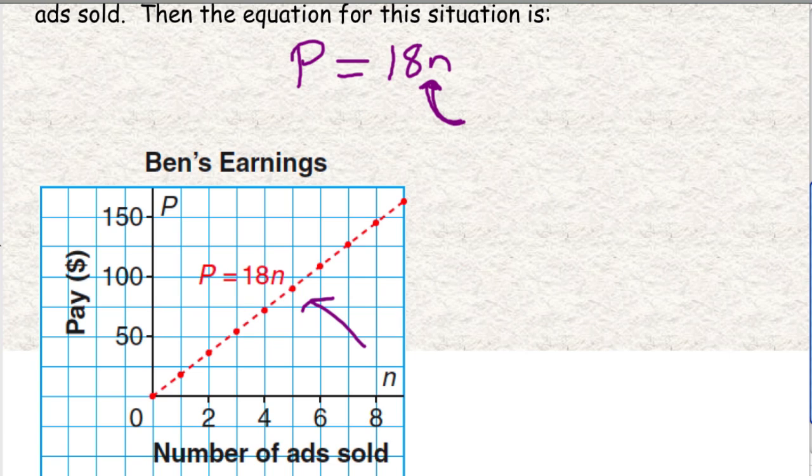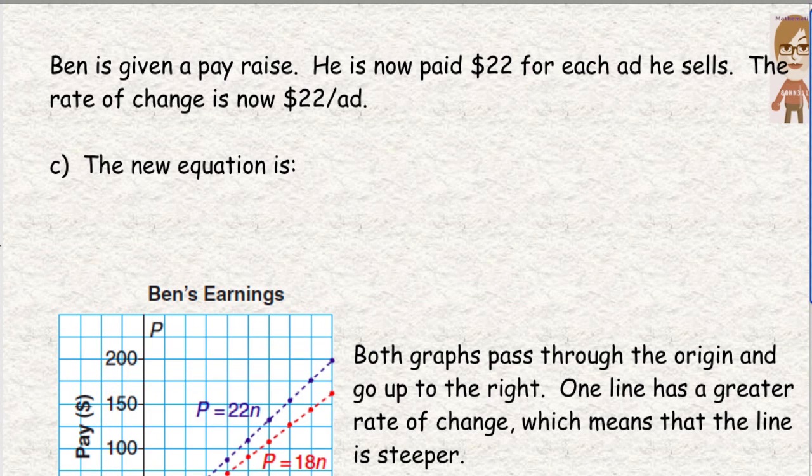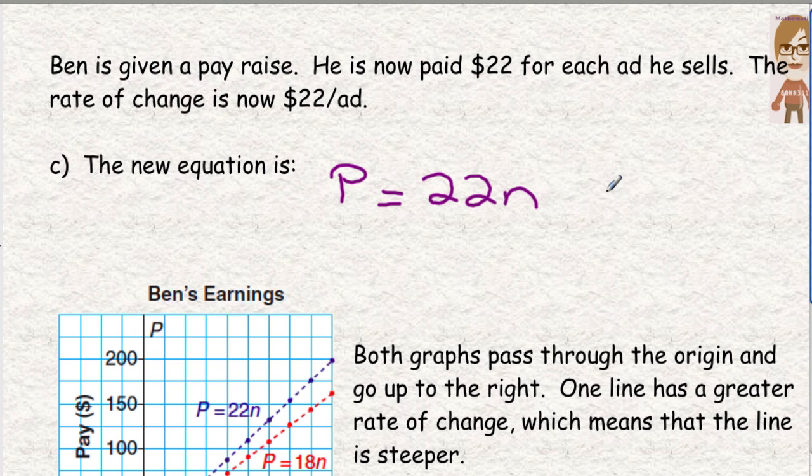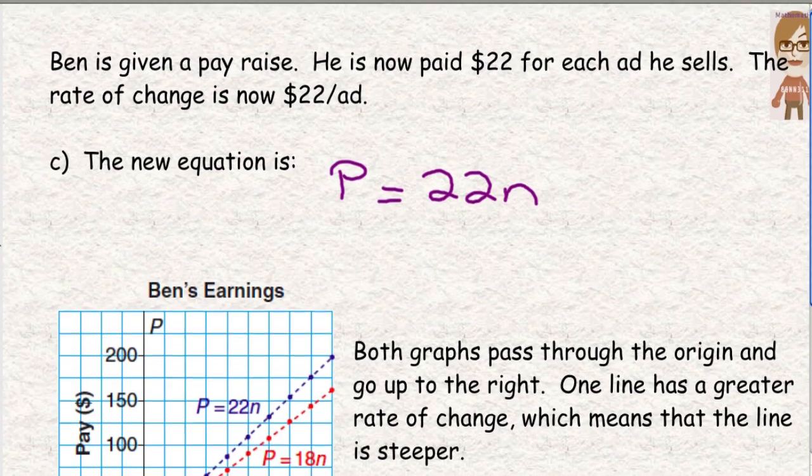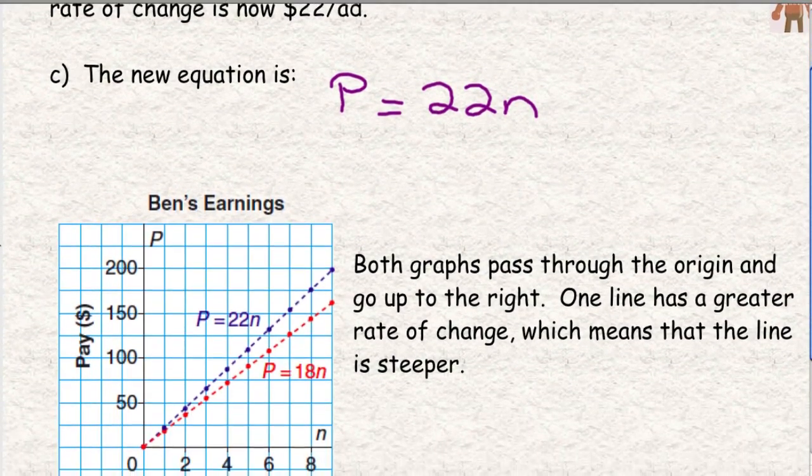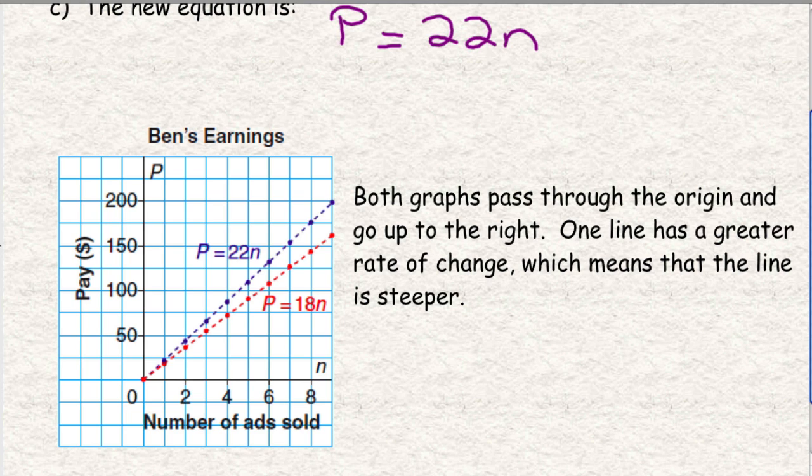Next, what it's going to ask is, he's given a pay raise. Now, he's paid $22 for each ad. So it was 18 and now it's 22. So now his pay is 22 per ad. Number of ads for N. So again, if you had 10 ads, 22 times 10. You would be able to figure out what his pay is per ad. This is kind of common sense, but having to write an equation is what is new. And this is a direct variation equation. There is no initial value. It's just a rate, $22 per ad.